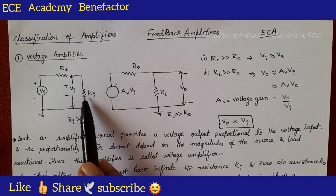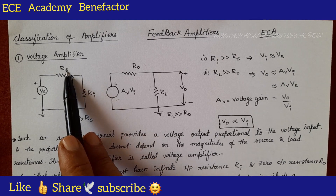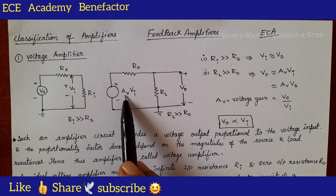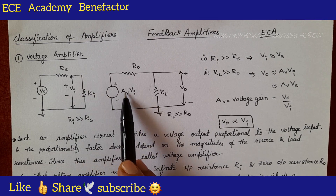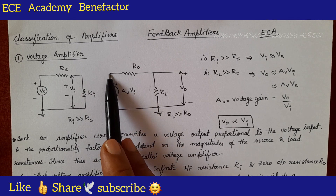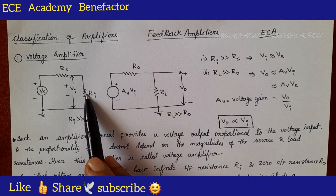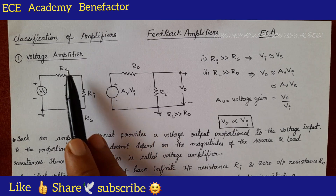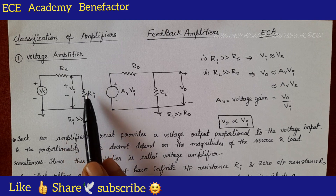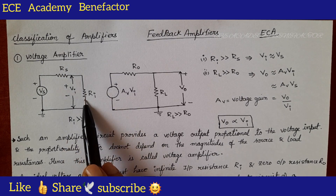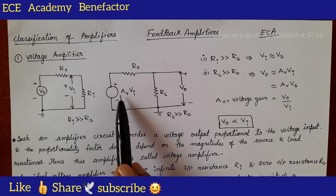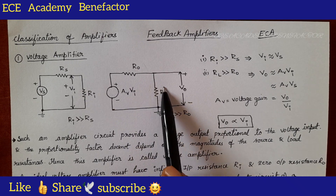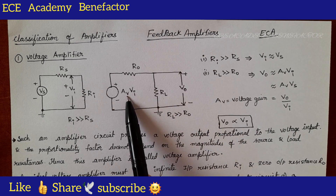For a voltage amplifier, R_i value is very very large compared to R_s. At the output side we are connecting voltage A_V × V_i, with a series output resistance R_naught. The condition for a voltage amplifier is R_i should be very very large compared to R_s. If R_i is very very large, it acts as an open circuit, so V_i equals V_s. At the output side, R_l is very very large compared to R_naught, so R_l becomes an open circuit, meaning V_naught equals A_V × V_i.